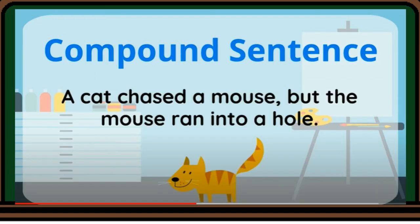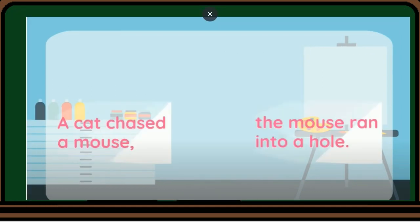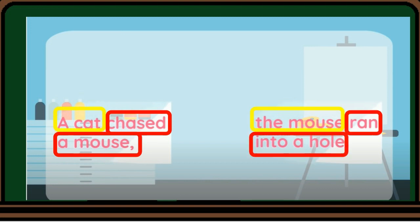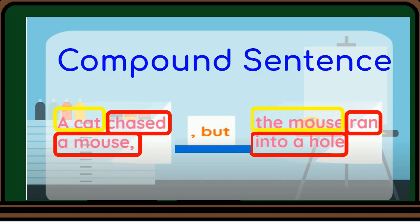Here is an example of a compound sentence: A cat chased a mouse, but the mouse ran into a hole. Herein, there are two simple sentences. In the first, a cat is the subject and chased a mouse is the predicate. Another subject is the mouse, and ran into a hole is the other predicate. These two simple sentences are connected by a comma and the conjunction but to make a compound sentence.